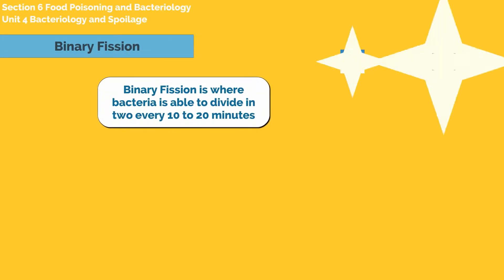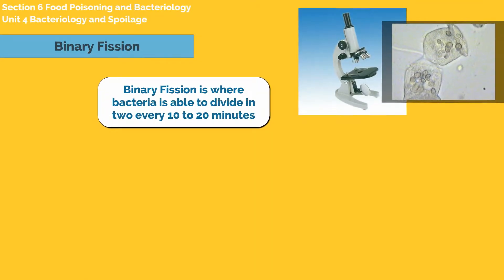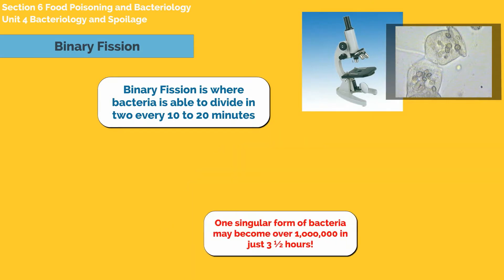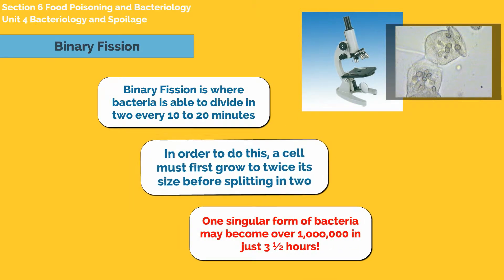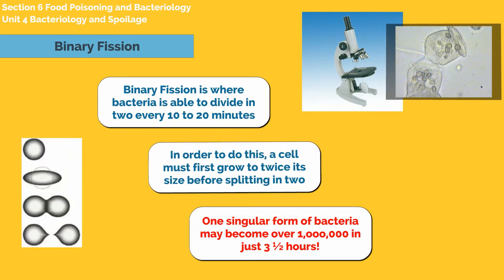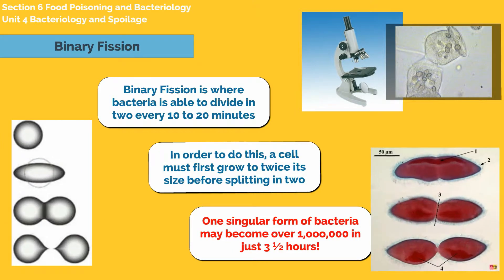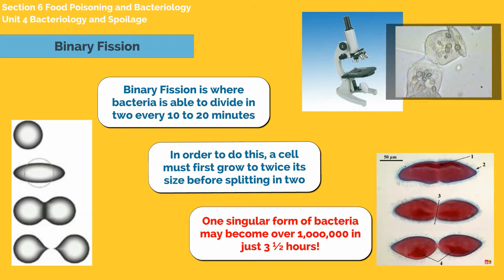Binary fission is where bacteria are able to divide in two every 10 to 20 minutes. In order to do this, a cell must first grow to twice its size before splitting in two. One singular form of bacteria may become over a million in just three and a half hours.